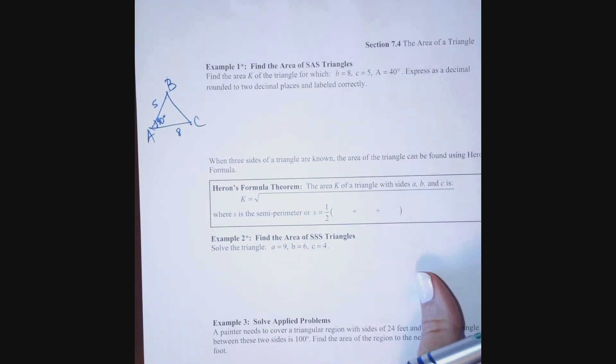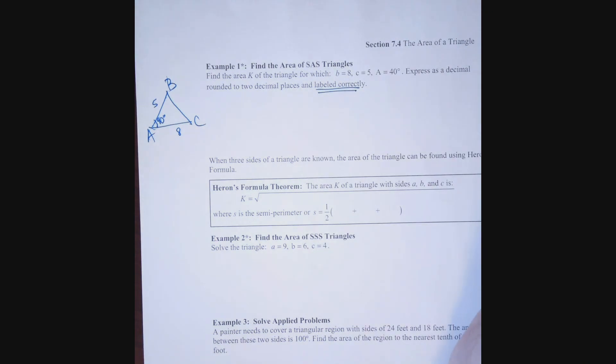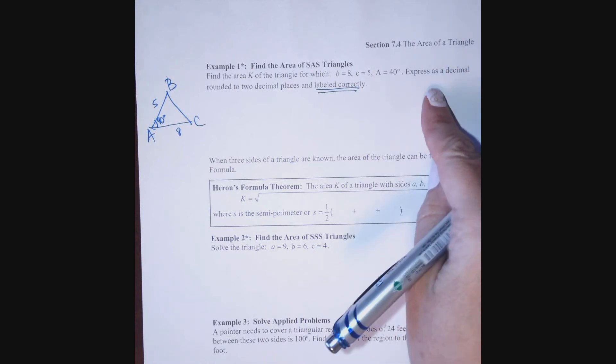Things are rounded correctly. Express as a decimal, rounded to two decimal places, and labeled correctly. Now, when I do area, my units are going to be squared, because I'm multiplying two dimensions together. In this case, we think of base times height. For example, feet times feet is feet squared. Inches times inches is inches squared.